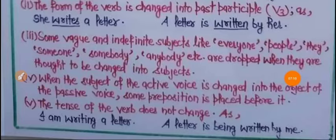Rule number 4: When the subject of the active voice is changed into the object of the passive voice, some preposition is placed before it. جب ہم subject کو active voice سے passive voice کے object میں بدلتے ہیں تو اس سے پہلے ہم preposition لگاتے ہیں جیسے کہ 'by'۔